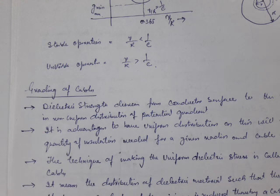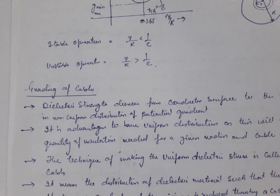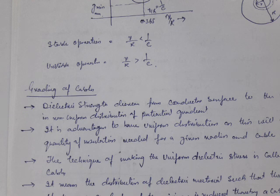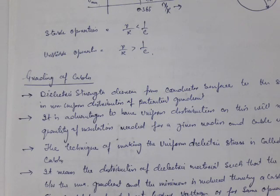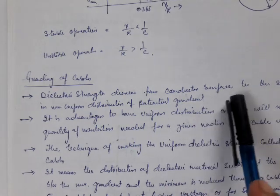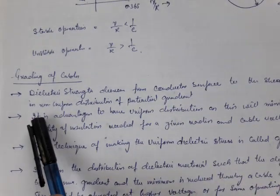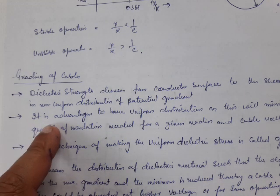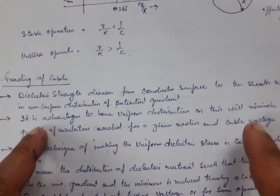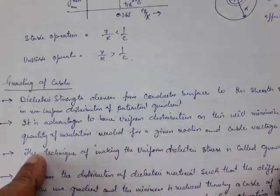Now we come to the grading of cables. In this case, we want the potential distribution along the dielectric to remain within certain limits so the dielectric does not get damaged. Dielectric stress decreases from the conductor surface to the sheath, resulting in non-uniform distribution of potential. It is advantageous to have uniform distribution, as this minimizes the quantity of insulation needed for a given cable radius and voltage.